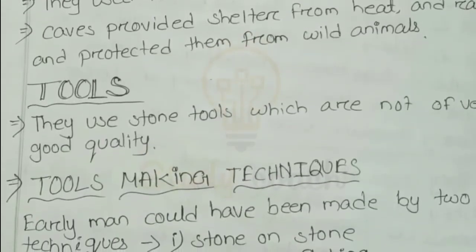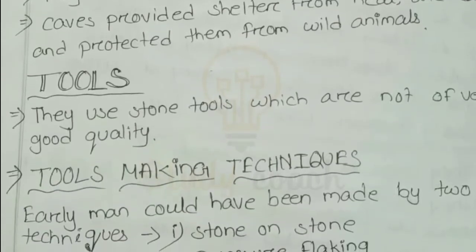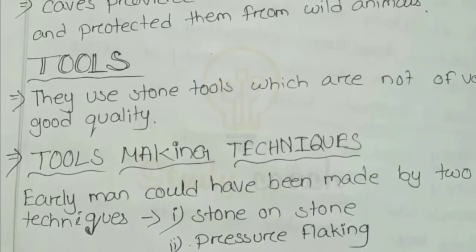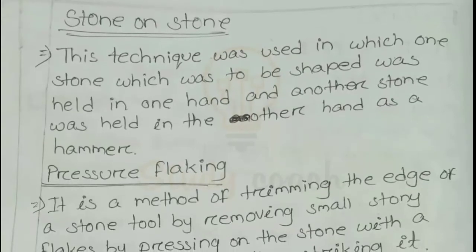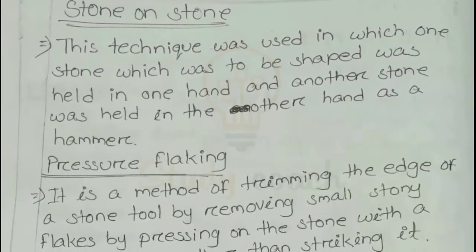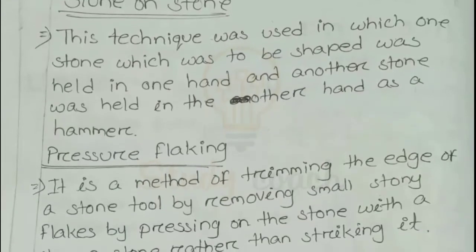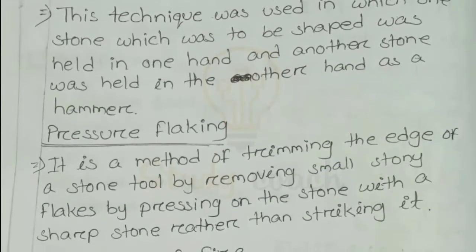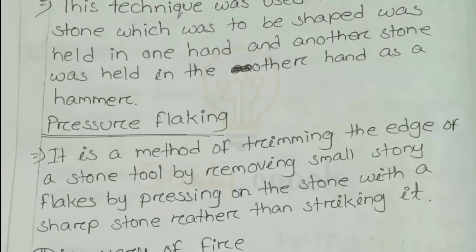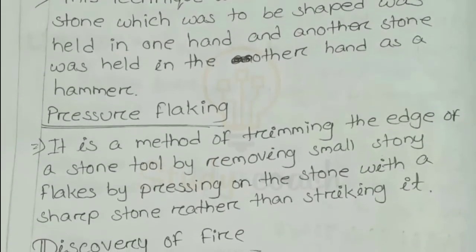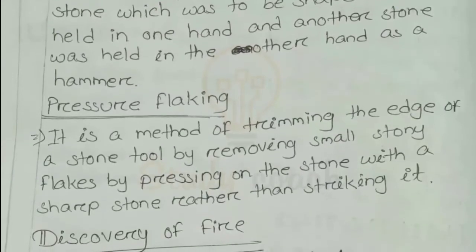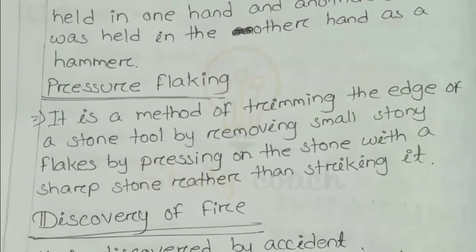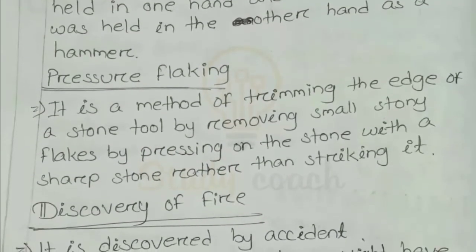Early men used two techniques to make tools. One is stone-on-stone and the second one is pressure flaking. In the stone-on-stone technique, one stone which was to be shaped was held in one hand and another stone was held in the other hand — like a hammer-like structure.